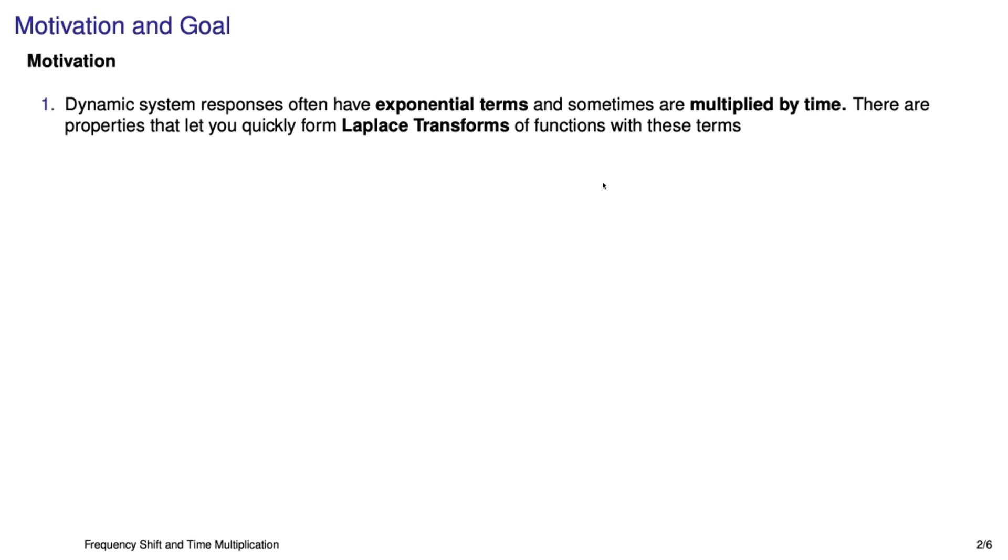There's two properties, so there's really two different motivations. Sometimes you'll have a function that you need to take the Laplace transform of, and it has an exponential term in it. When that happens, you should really think about using the complex frequency shift. Similarly, sometimes you'll have functions that you want to Laplace, and they have factors of time in them - t, t-squared, t-cubed, etc. And for that one, of course, you use multiplication by time.